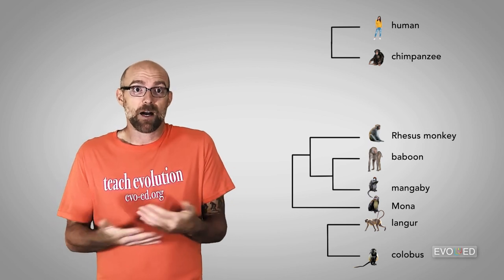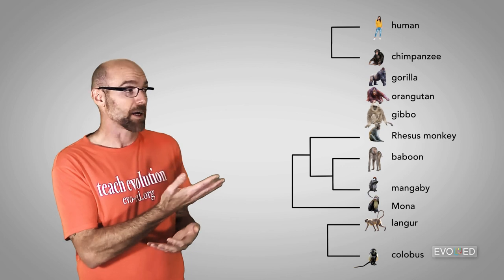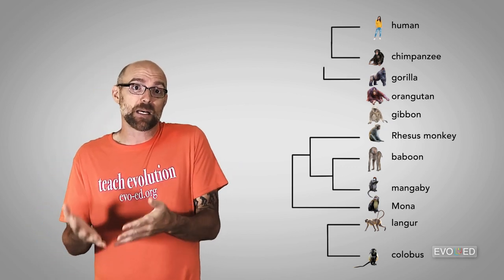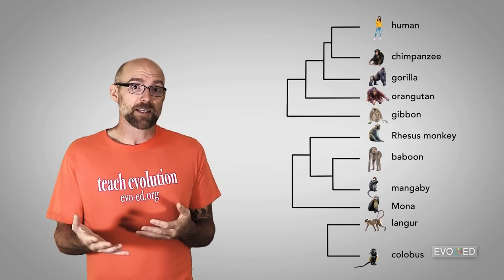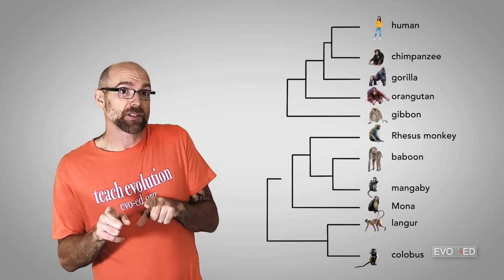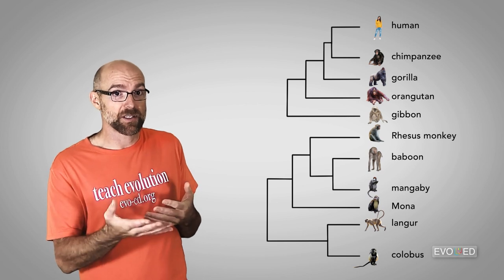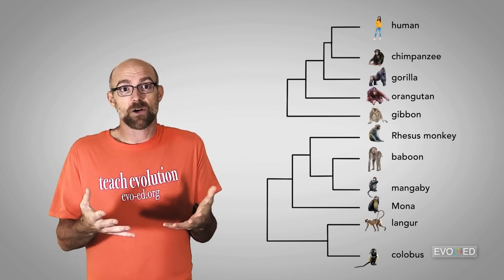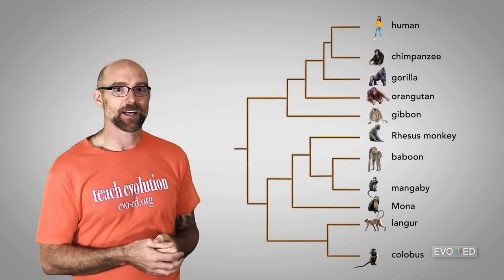We could also plot out where the gorilla, the orangutan, and the gibbon should go in our diagram, purely based on how similar their cytochrome B sequence is to the other species in our analysis. We would also discover that the langur and colobus sequences are more similar to the sequences that we find in the baboon-mangabey group as compared to the sequences that we find in the human chimpanzee group. And so, at the end of this whole process, we have this tree-like structure.